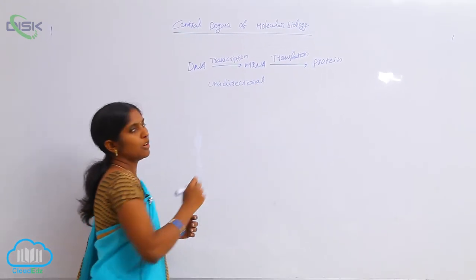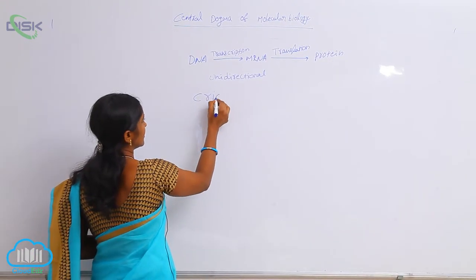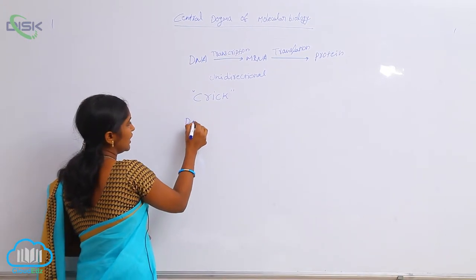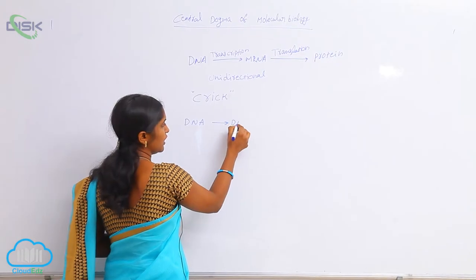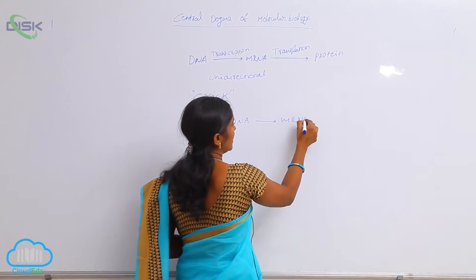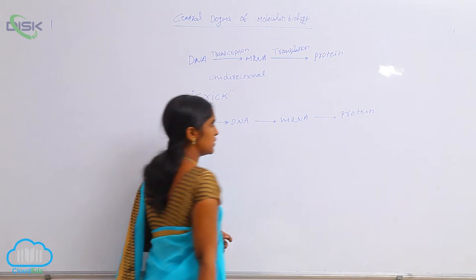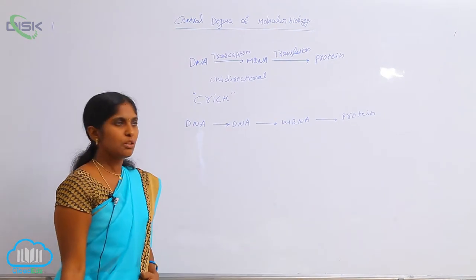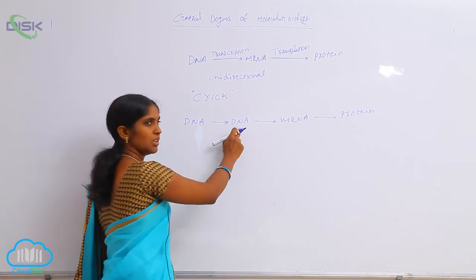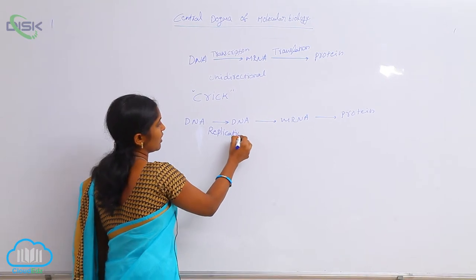The central dogma of molecular biology was proposed by the scientist Crick. According to him: DNA to DNA formation, DNA to mRNA production, and mRNA to protein production. DNA to DNA means mother DNA to daughter DNA production — that is the process of replication.